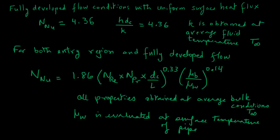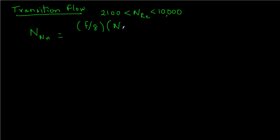The second case is what we call transition flow in a pipe. This is the condition where the Reynolds number is greater than 2100 but less than 10,000. In this case, the formula is more complicated. Nusselt number equals a ratio. In the numerator, we have (F/8) × (Reynolds number - 1000) × Prandtl number.